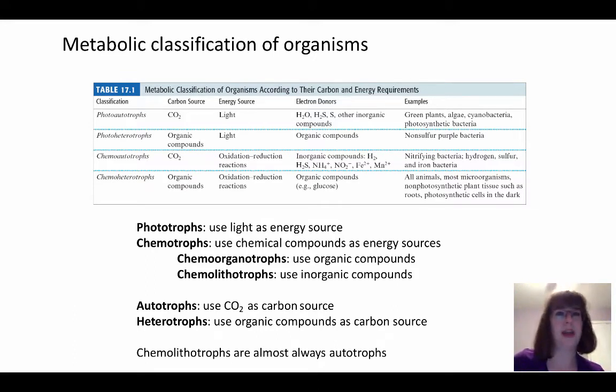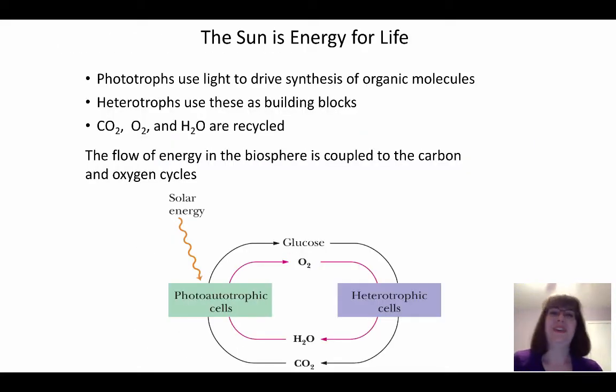Autotrophs are going to use carbon dioxide as a carbon source and heterotrophs are using organic compounds as a carbon source. As you might have figured out, autotrophs are going to be things like plants, many sources of algae, things like that. Heterotrophs will be organisms that eat other organisms often. The chemolithotrophs are going to be especially those ones that are usually almost always autotrophs. You do have some really interesting situations of different organisms using unlikely sources.